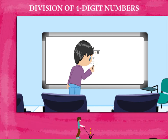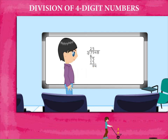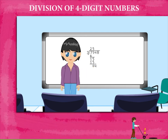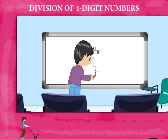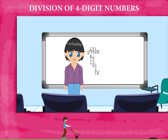He copies 4, divides 4 by 3, and gets 1 that he writes at the top. He writes 3 below 4, subtracts, gets 1, and copies the last digit 8. He now divides 18 by 3.